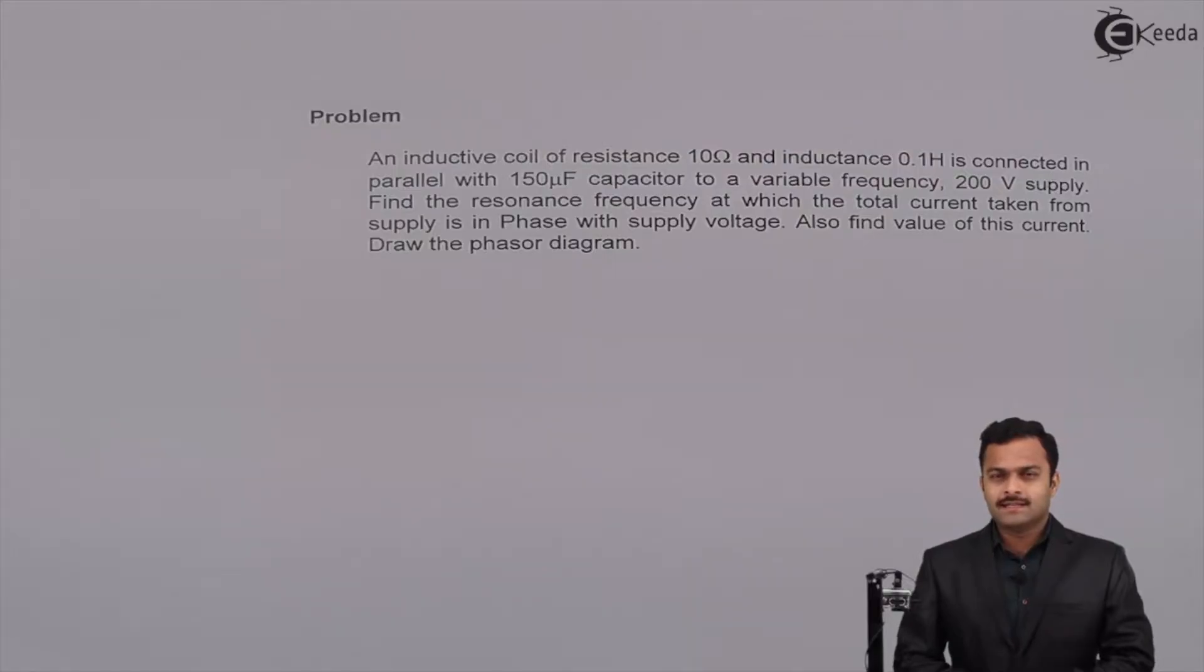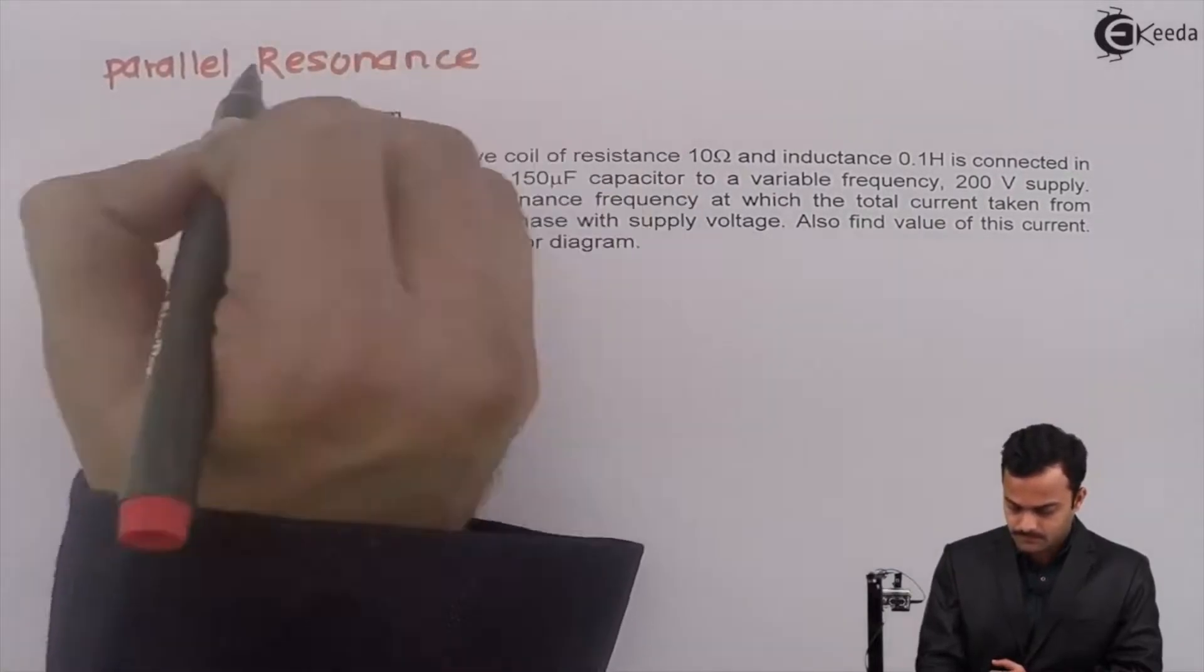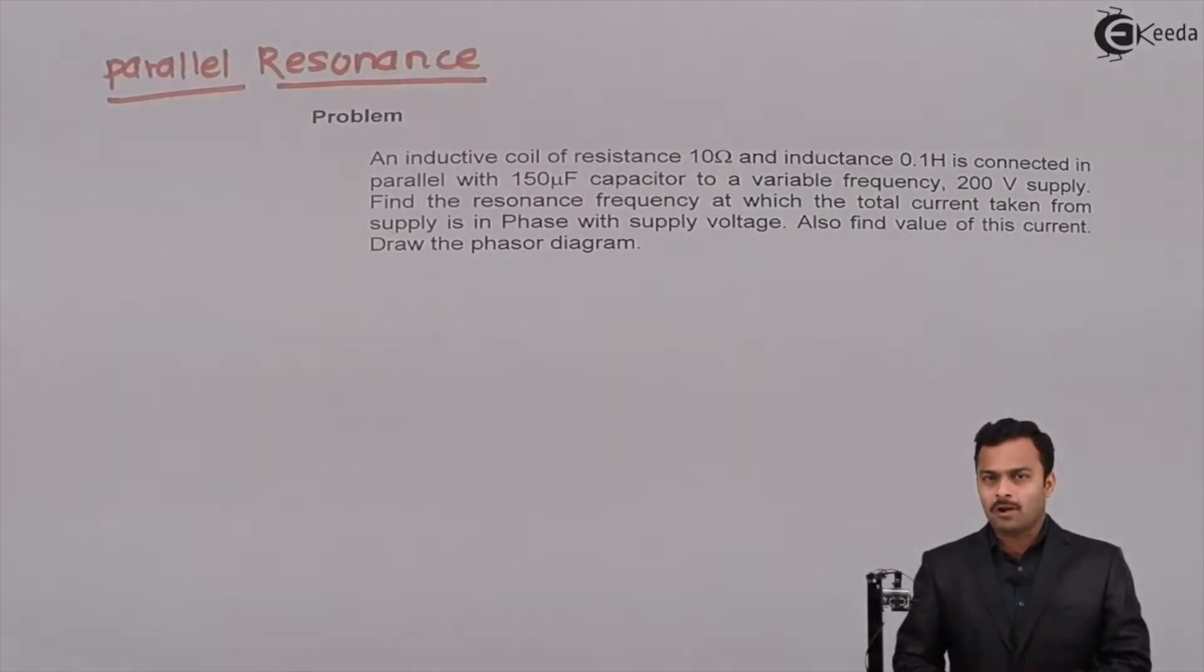Hi friends, in this video we are going to solve a problem based on parallel resonance. Let's read out the problem statement: an inductive coil of resistance 10 ohm and inductance 0.1 henry is connected in parallel with 150 microfarad capacitor to a variable frequency 200 volt supply. Find the resonance frequency at which the total current taken from supply is in phase with supply voltage.